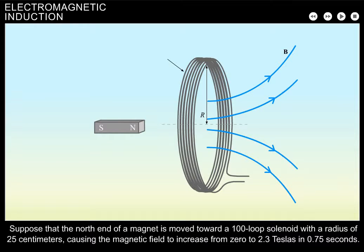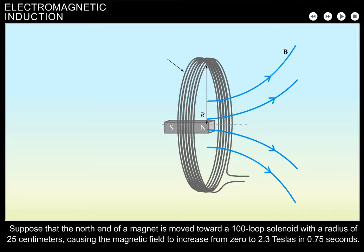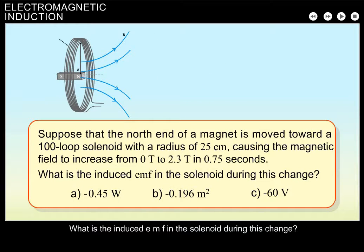Suppose that the north end of a magnet is moved toward a 100-loop solenoid with a radius of 25 centimeters, causing the magnetic field to increase from 0 to 2.3 teslas in 0.75 seconds. What is the induced EMF in the solenoid during this change?